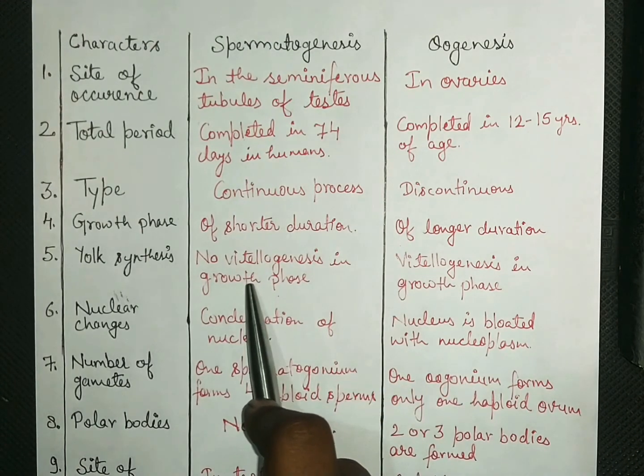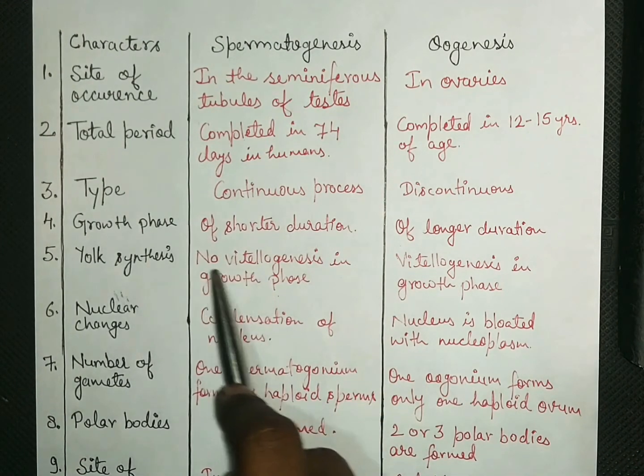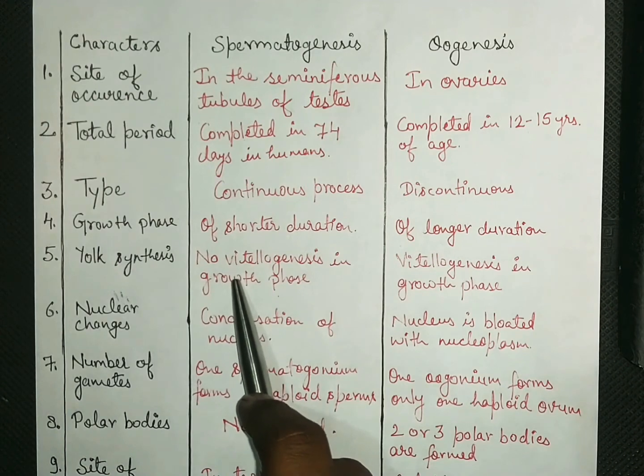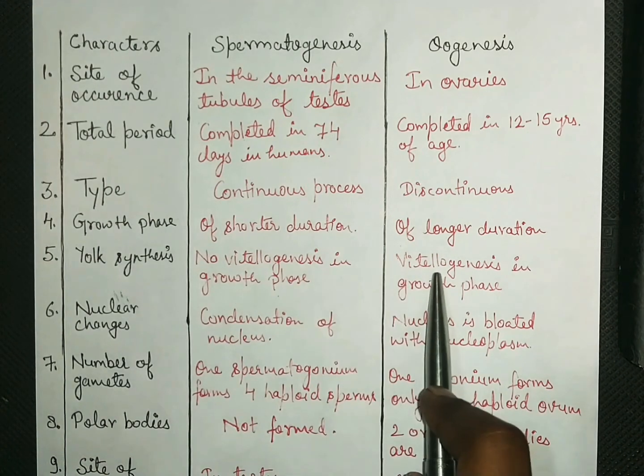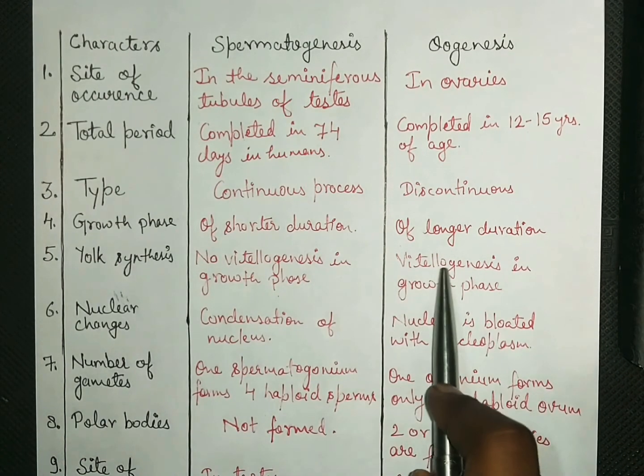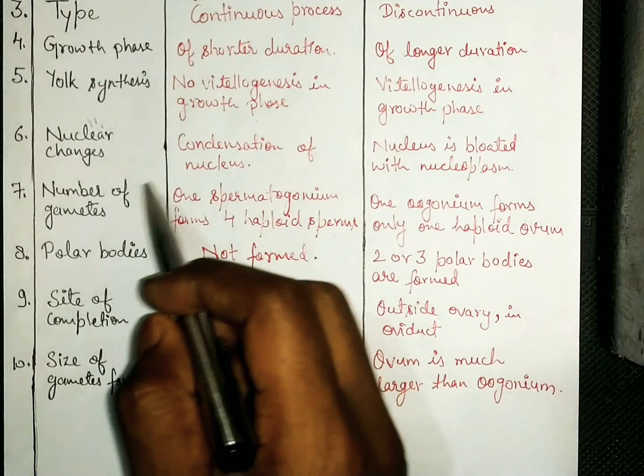Yolk synthesis is not seen in spermatogenesis. So there is no vitellogenesis in spermatogenesis. While in oogenesis, vitellogenesis can be seen sometimes.